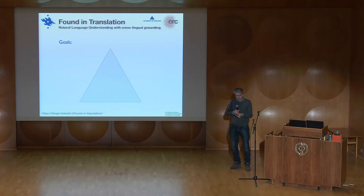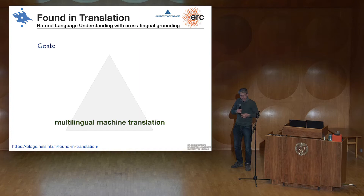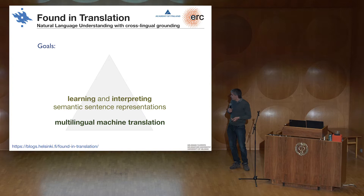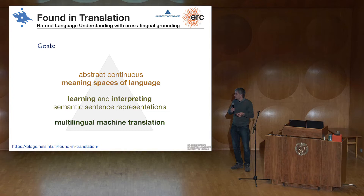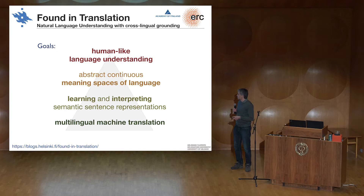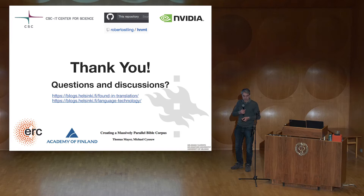Coming back to the project: as a minimal goal we want multilingual machine translation, but especially we want to focus on learning and interpreting semantic sentence representations — representation learning is one of the most important things we want to look at. We especially want to have an abstract continuous meaning space over all languages, a language-independent space, and try to approach something in the direction of human-like understanding of languages. Thank you for your attention — I'm open for questions and comments.